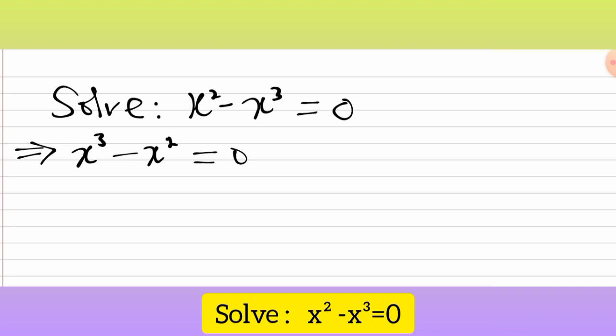We haven't done anything wrong to the equation. The first equation is still equivalent to the second equation. The only change is that we wanted the leading term to be the variable with the highest power, which is x³ - x² = 0.